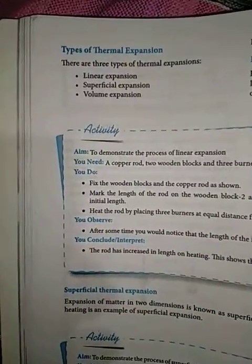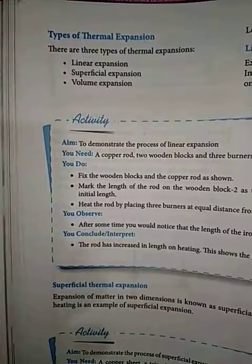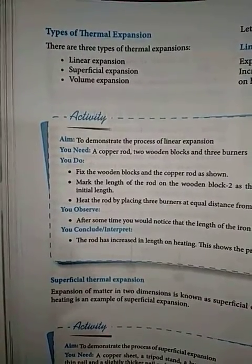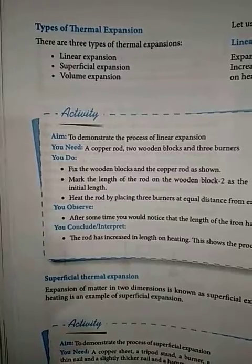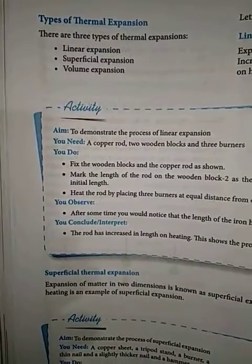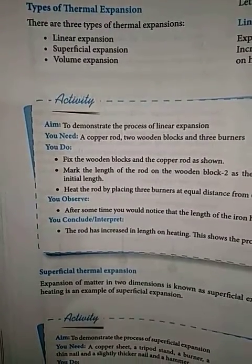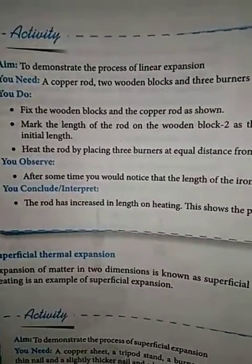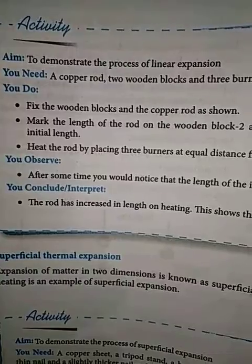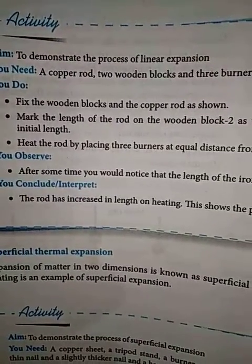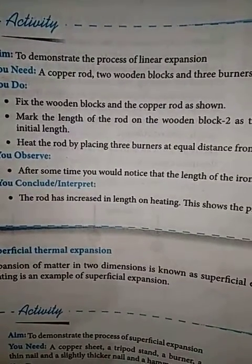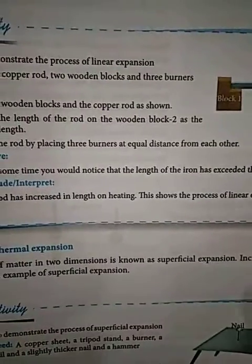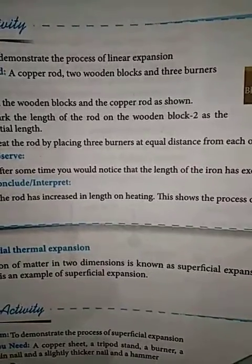Now, types of thermal expansion. There are three types of thermal expansion: linear expansion, superficial expansion, and volume expansion. Linear expansion: expansion of matter in length is called linear expansion. An increase in the length of a metallic wire or a metal rod on heating is an example of linear expansion.